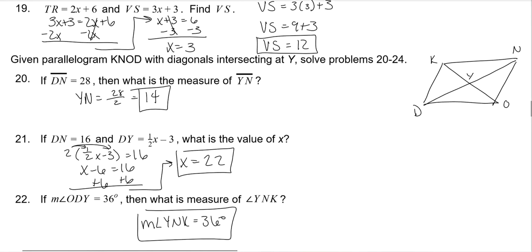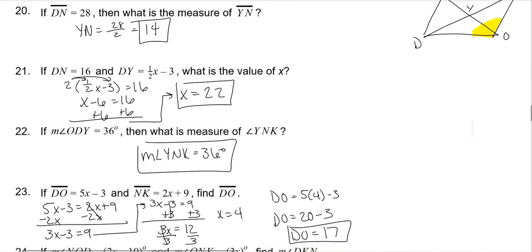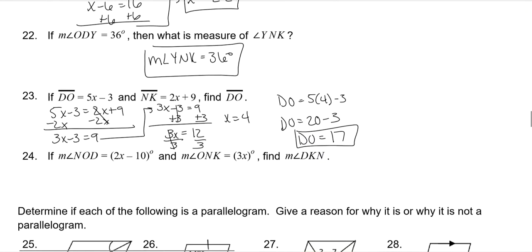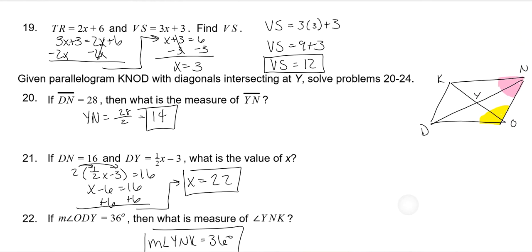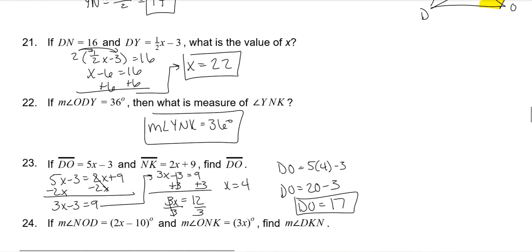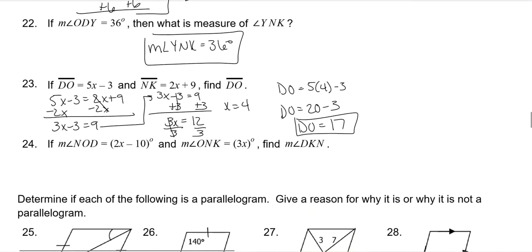Angle NOD is the whole yellow angle, and angle ONK is the whole pink angle. They are supplementary, so add them and set equal to 180. Angle DKN is the same as angle NOD because opposite angles are congruent in a parallelogram. So set them equal, then add and solve with the supplementary relationship.